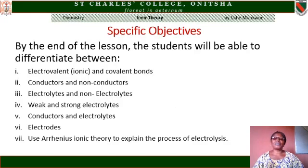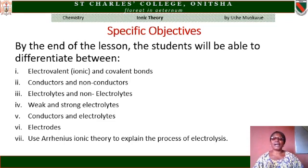Before we go into the lesson, let us look at the objectives. Students, by the end of this lesson, you will be able to differentiate between electrovalent and covalent bonds, conductors and non-conductors, electrolytes and non-electrolytes, weak and strong electrolytes, conductors and electrolytes, and electrodes. Finally, you will be able to use Arrhenius Ionic Theory to explain the process of electrolysis.